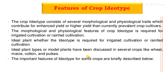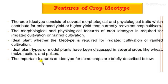Next, the features of crop ideotype. The crop ideotype consists of several morphological and physiological traits which contribute to enhanced or higher yield compared to currently prevalent, local, or traditional cultivars. The morphological and physiological features of the crop ideotype are required for irrigated cultivation or rainfed cultivation. Ideal plant types have been discussed in several crops like wheat, maize, cotton, and pulses.